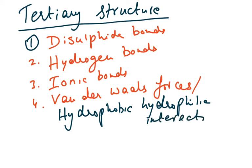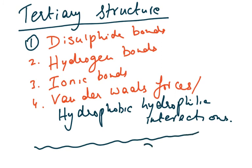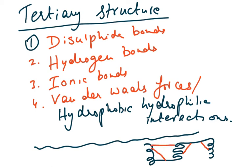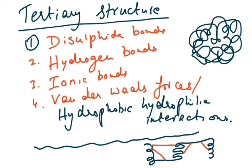In the tertiary structure, after the polypeptide chain forms and the alpha helix and beta pleated sheet develop, further bonding occurs at various points along the chain. These bonds fold the protein molecule even further to produce a complex 3D structure. The primary structure is the sequence; secondary is alpha helix and beta pleated sheet; tertiary is the further folding.